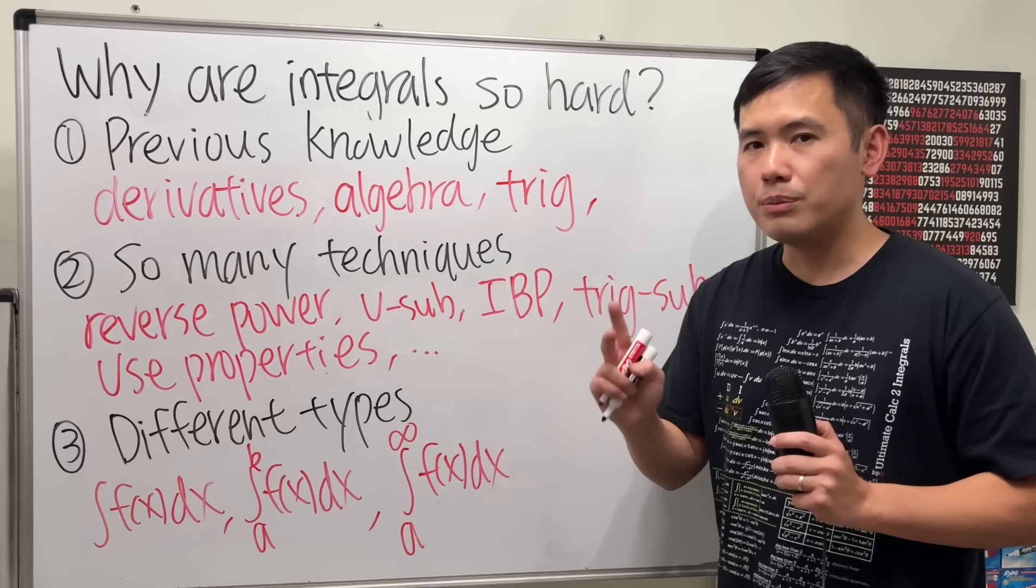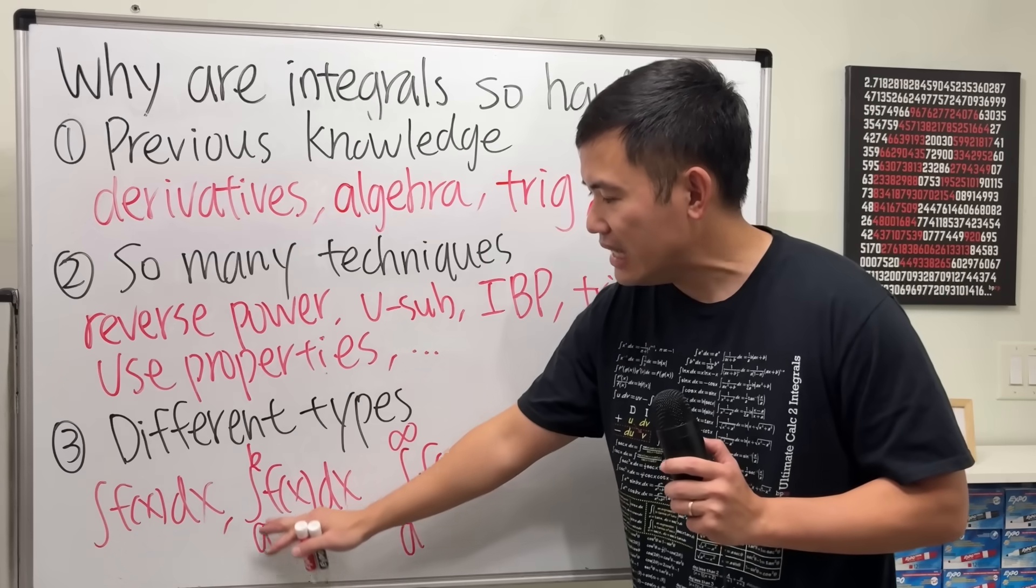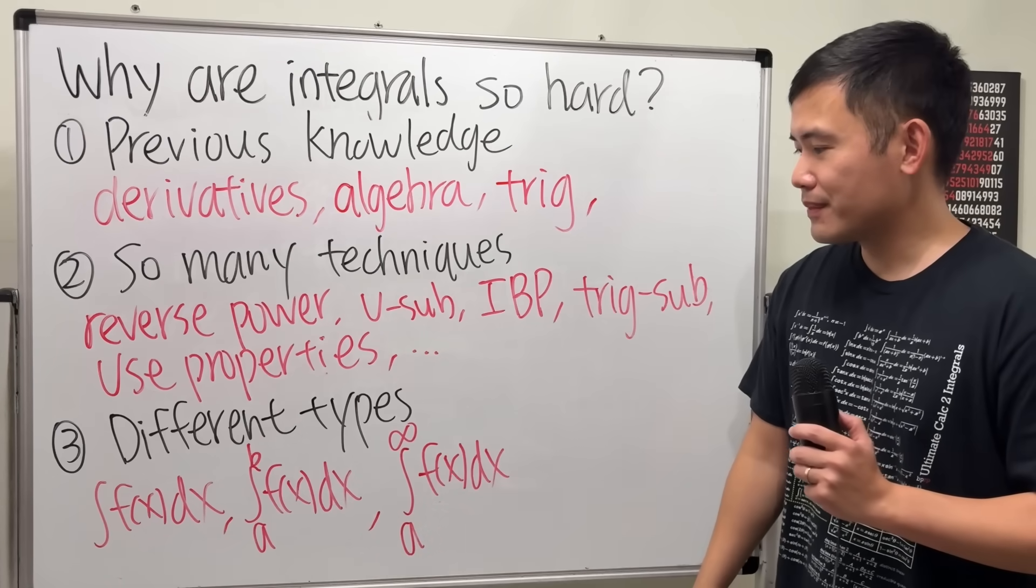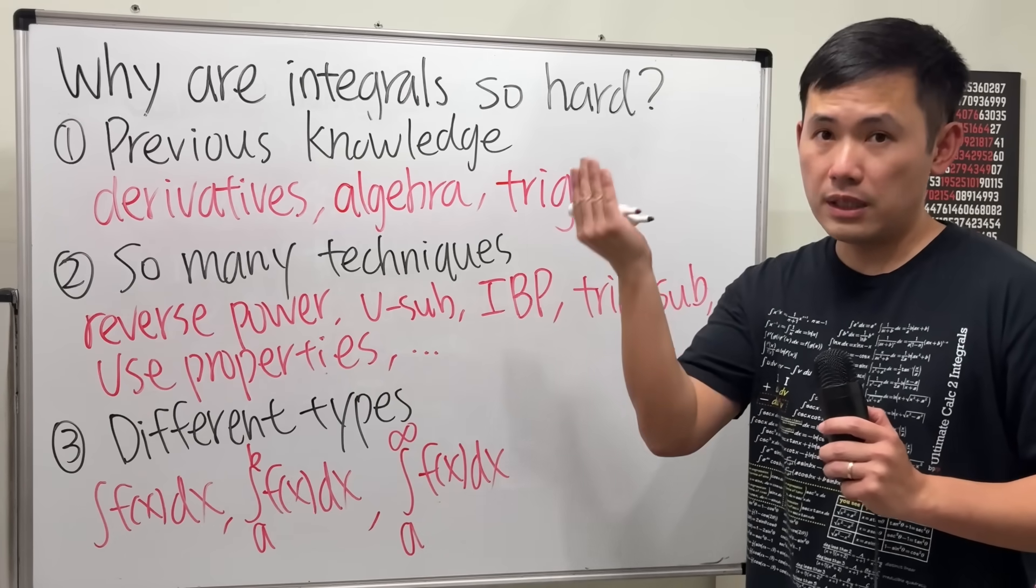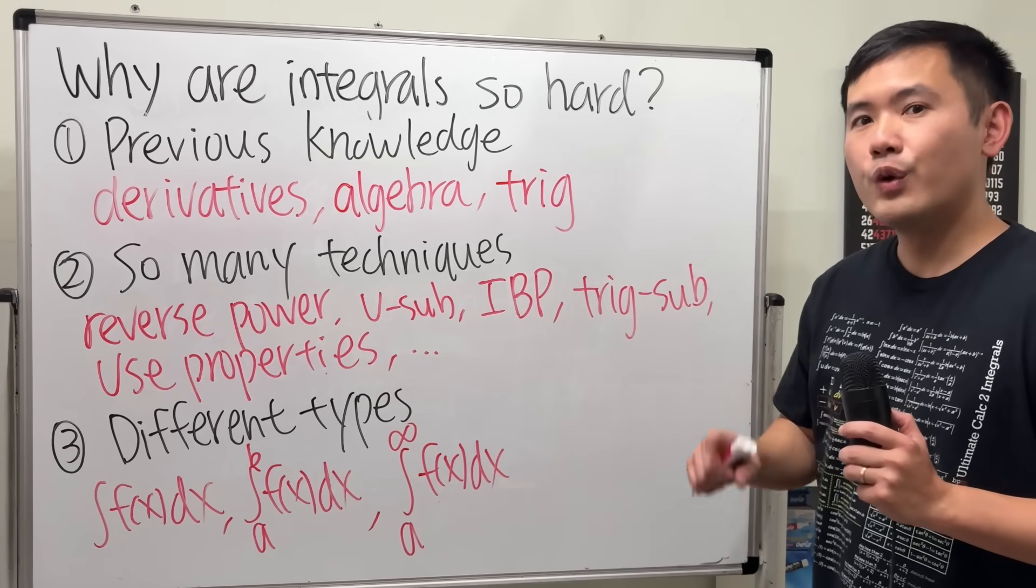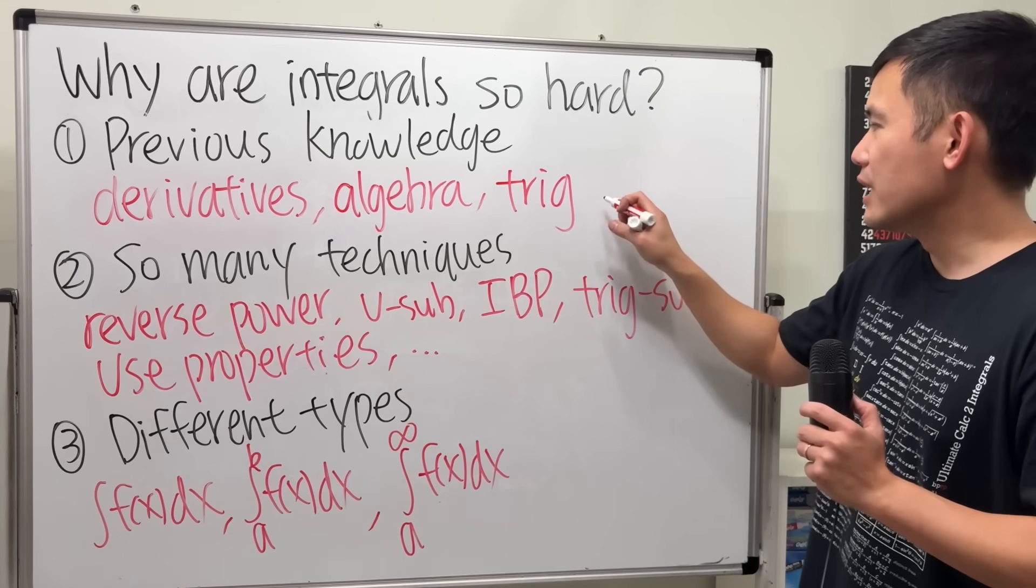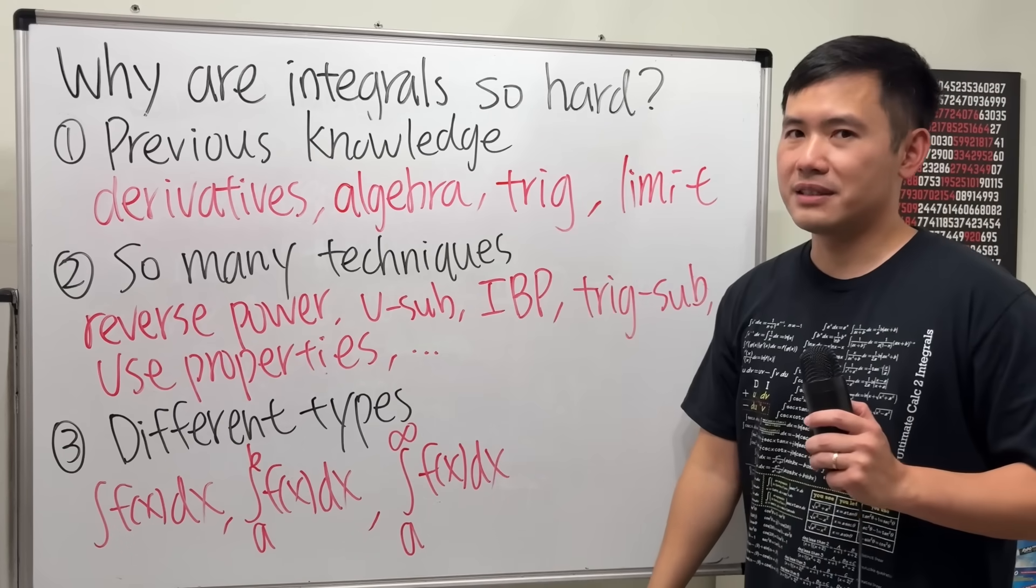There's also the type 2 improper integral where you have a vertical asymptote on the interval that you are trying to integrate. Now, notice, because we are dealing with infinity, and sometimes when we have vertical asymptote, that's also a kind of infinity. Well, when we are dealing with infinities, we better remember our limits. So let me put that right here. Limit from the previous class.